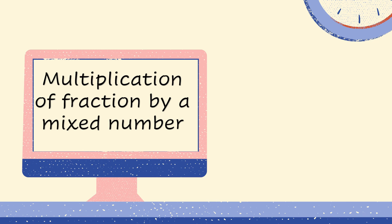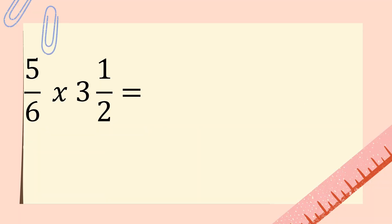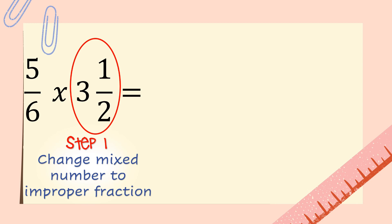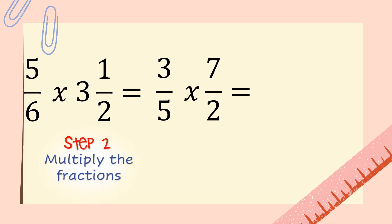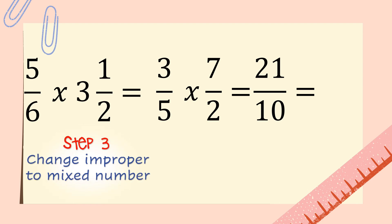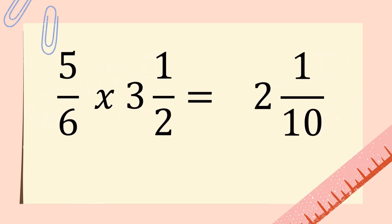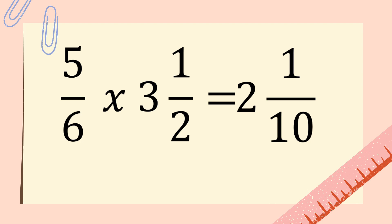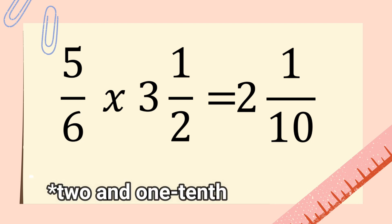Multiplication of fraction by a mixed number: five-sixth times three and one-half. Step one: change the mixed number to an improper fraction. Step two: multiply the fractions. Step three: change the improper fraction to a mixed number. So five-sixth times three and one-half equals two and one-half.